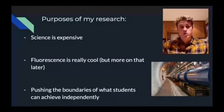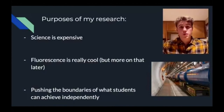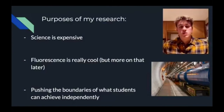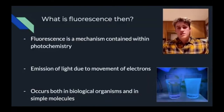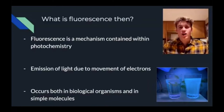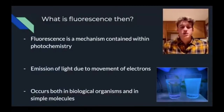I wanted to look at a process known as fluorescence, which I think is a really cool phenomenon, and study something completely outside of my A-level courses. Fluorescence is a mechanism for decay within the broader topic of photochemistry, which is mainly about how light interacts with matter. Specifically, it looks at how electrons are affected by incoming photons and how this changes their energies within a molecule. The most common thing associated with fluorescence is the emission of light.